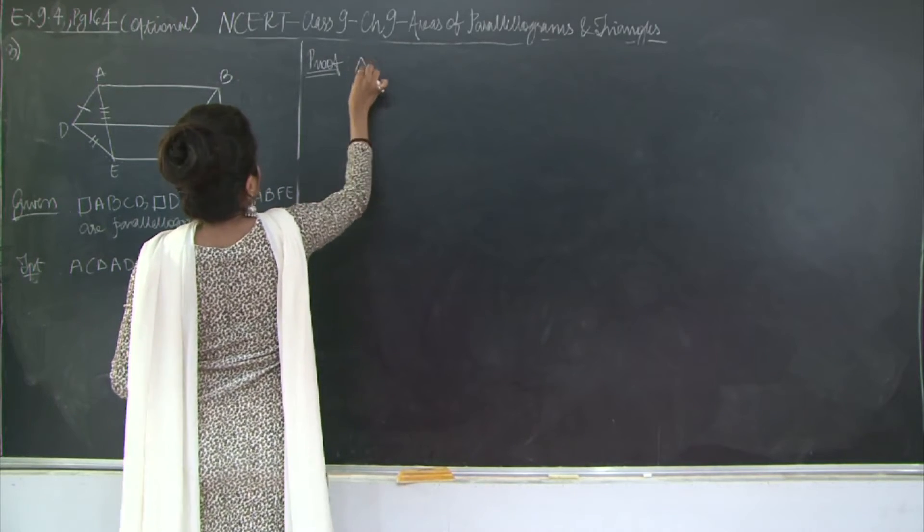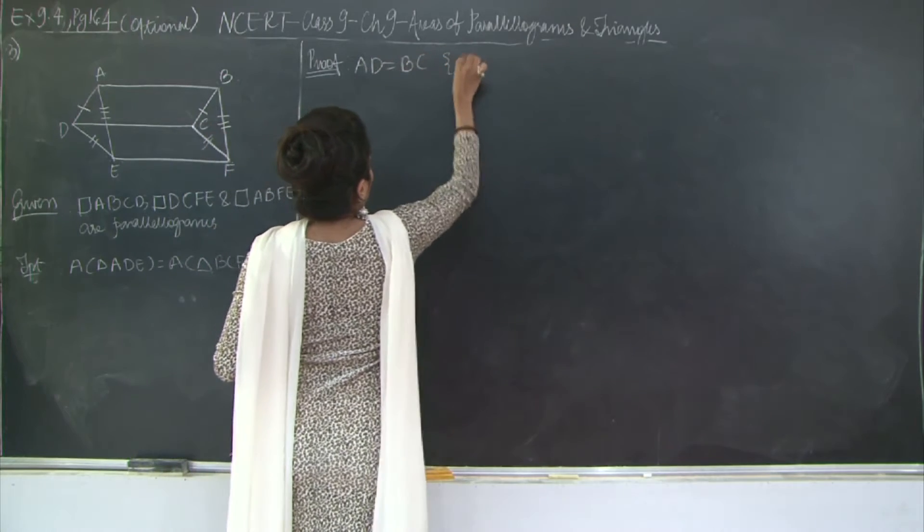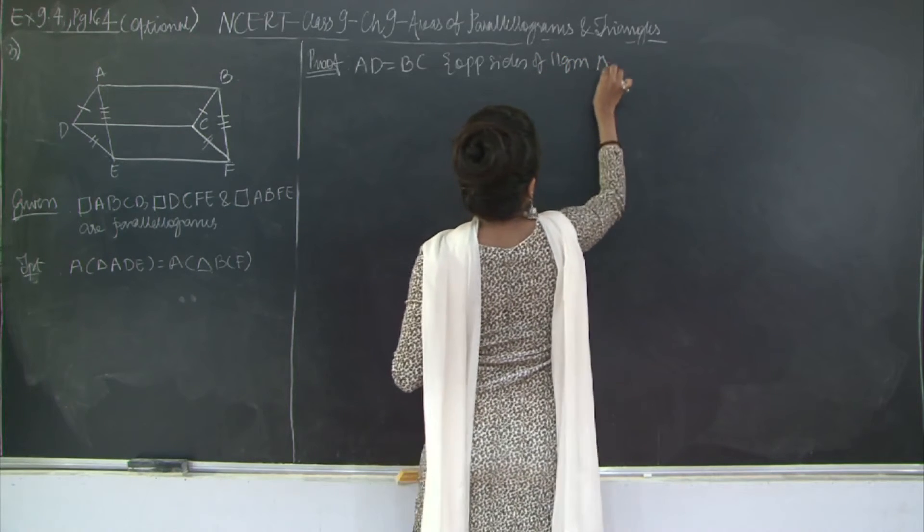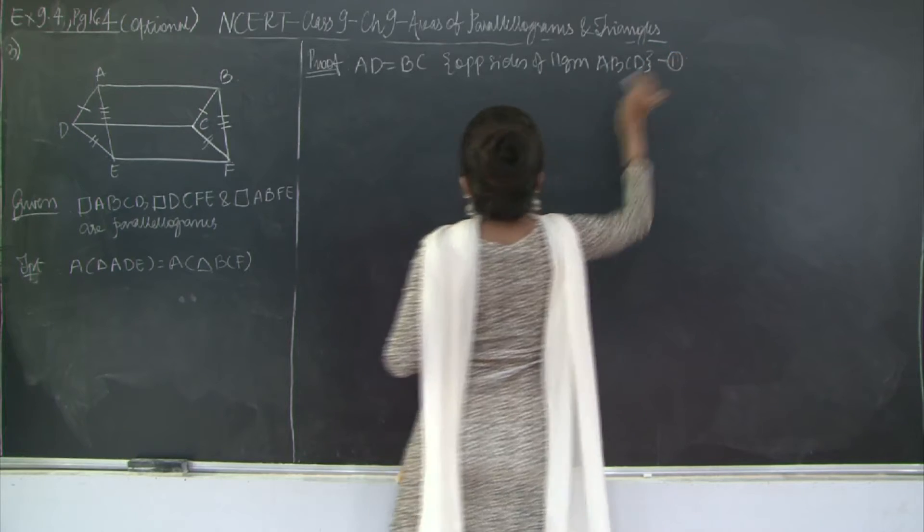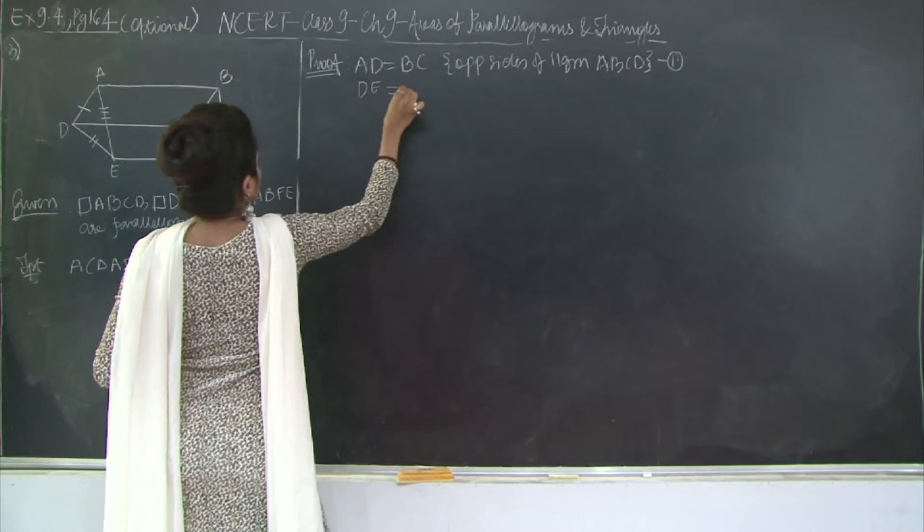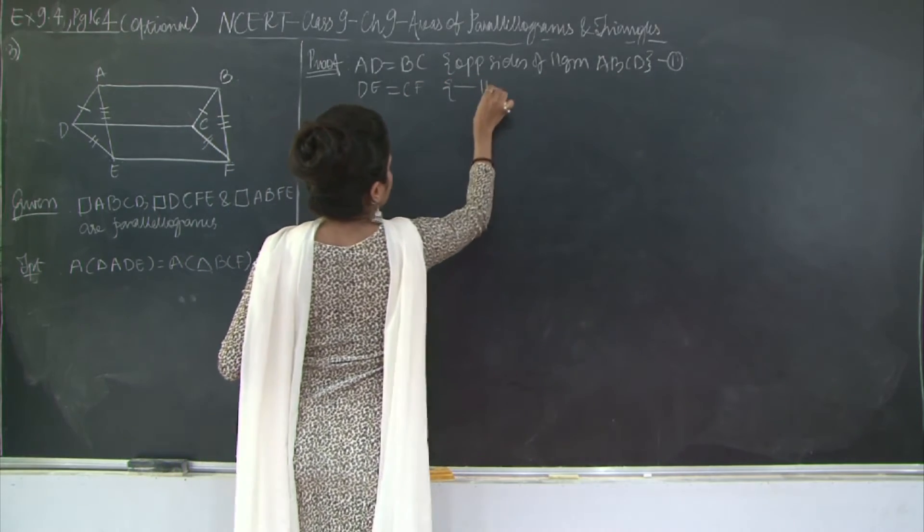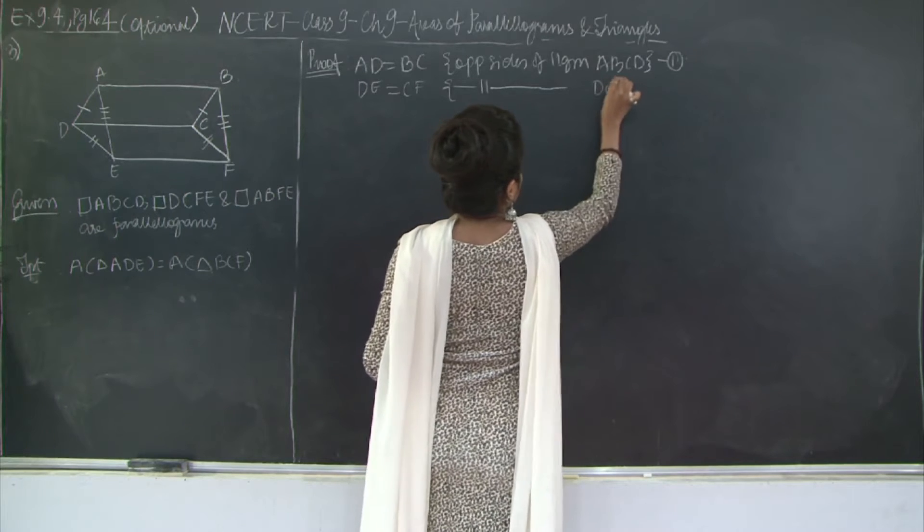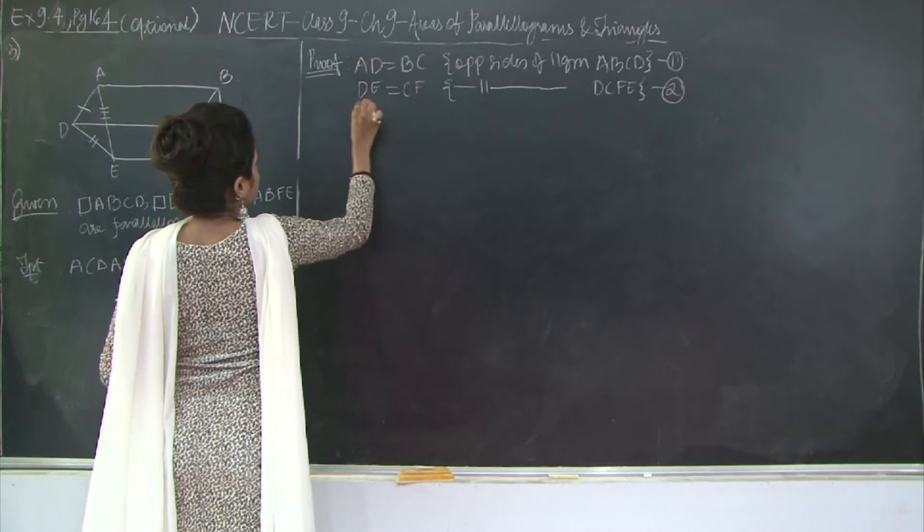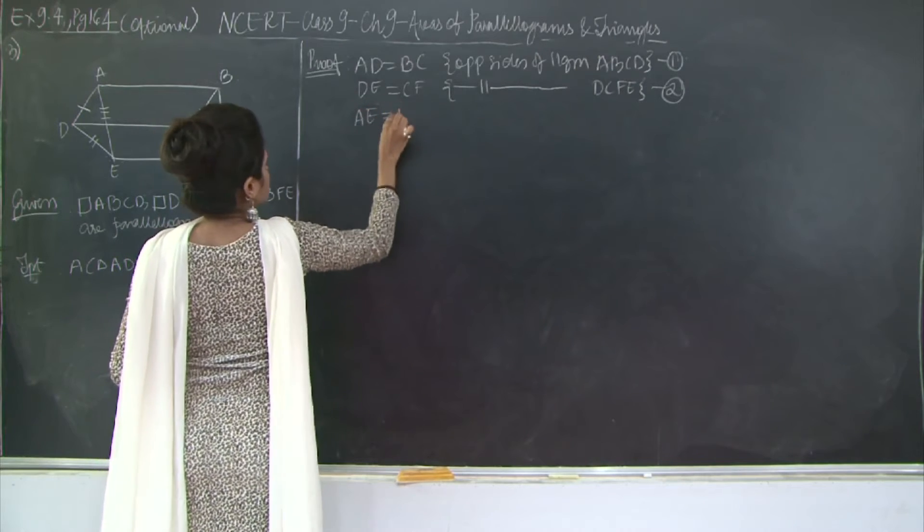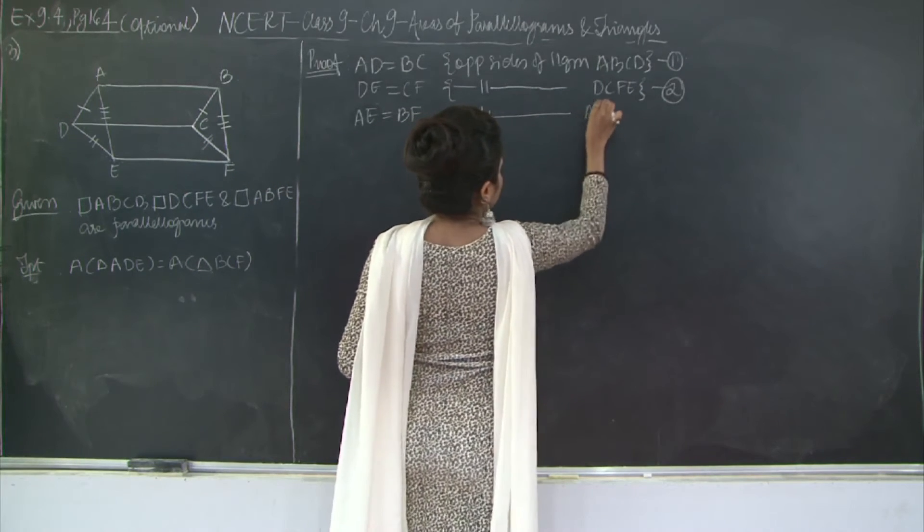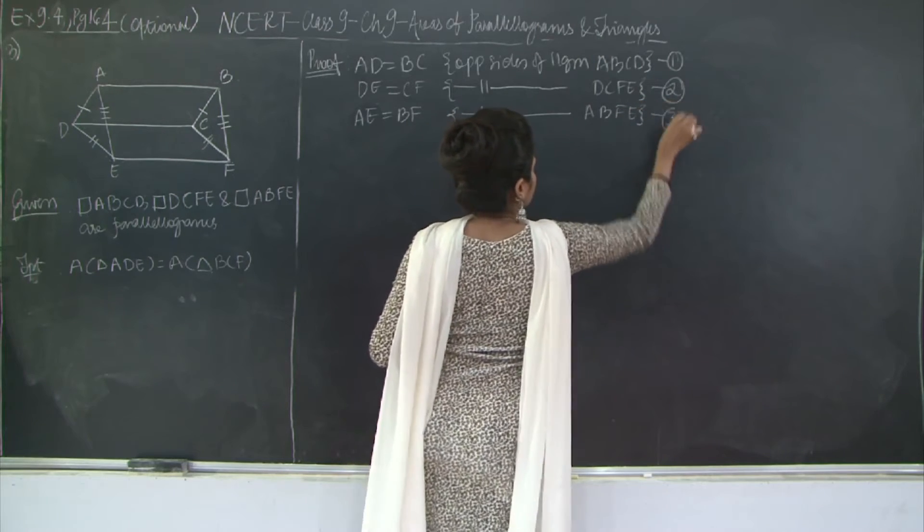I will say AD is equal to BC, opposite sides of parallelogram ABCD. Let's mark this as one. Then I have DE is equal to CF, again opposite sides of parallelogram DCFE. Let's mark this as two. Similarly, I am going to say that AE is equal to BF. Why? Again, they are opposite sides of parallelogram ABFE.